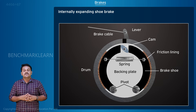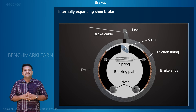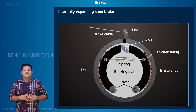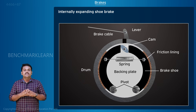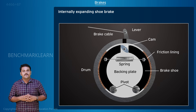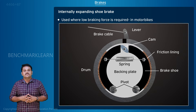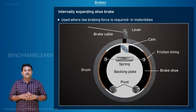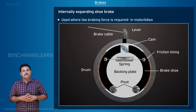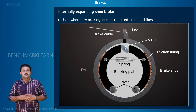The cam pushes the shoes against the internal face of the rotating drum. The frictional force between the friction material and the drum causes the rotating drum to slow down and stop. This brake is used in automobiles where low braking force is required, for example in motorbikes.